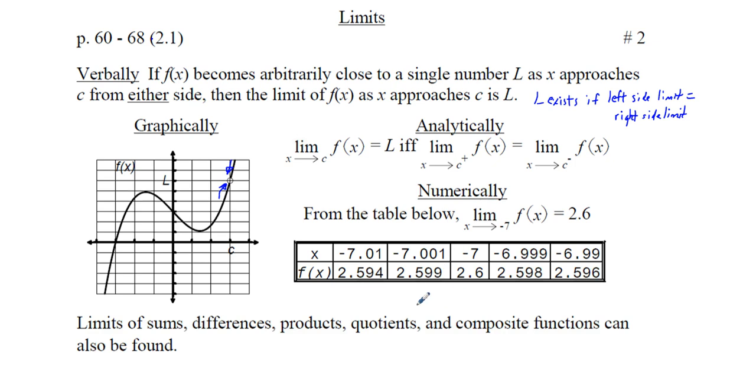Numerically, we see that as the x values approach negative seven from each side, the value of 2.6 is being approached. Even if we had undefined instead of 2.6 here, we would still have a limit of 2.6 since we are approaching the value of 2.6 from both sides.